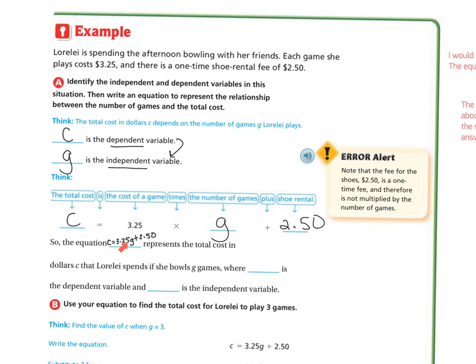My equation represents the total cost in dollars, C, that Lorelai spends if she bowls G games, where C is the dependent variable and G is the independent variable.